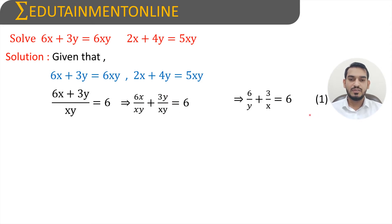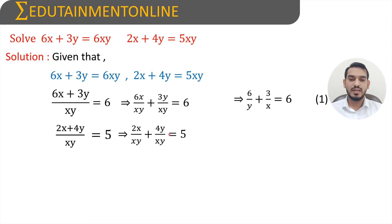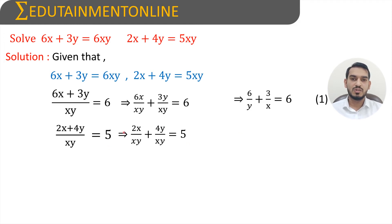For the second equation, 2x plus 4y equals 5xy, transpose xy to the left-hand side: (2x plus 4y) divided by xy equals 5. Splitting the numerator: 2x/xy plus 4y/xy. Cancel x and x in the first term and y and y in the second term, giving 2/y plus 4/x equals 5.